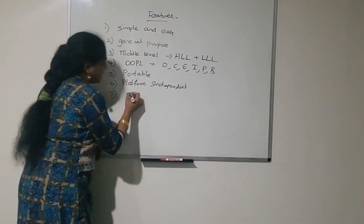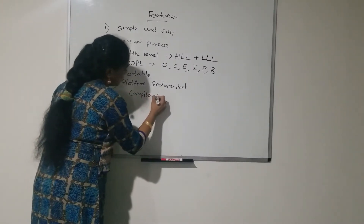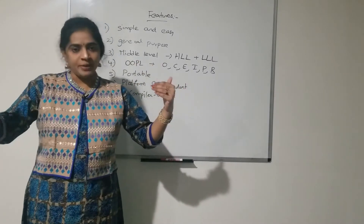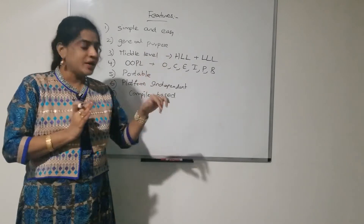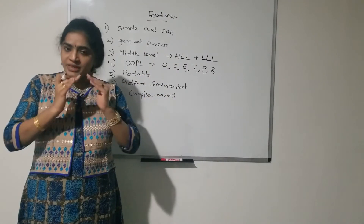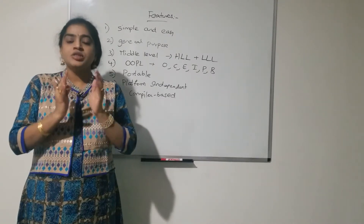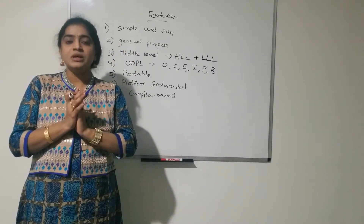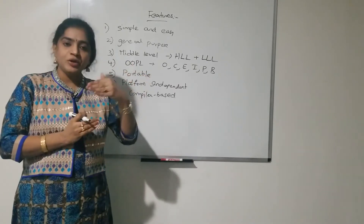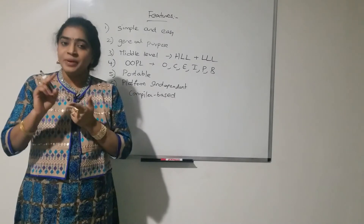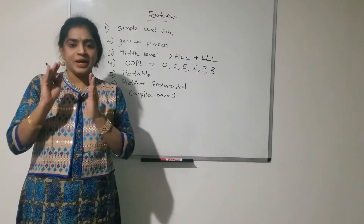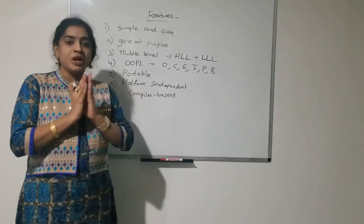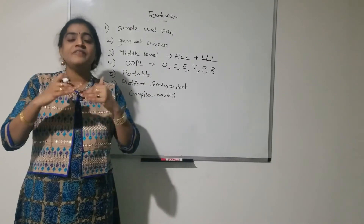C++ is a compiler based programming language. The language translator used here is a compiler. Compiler-based programming languages are fast with respect to performance — the execution speed is greater compared to interpreted programming languages. Python is an interpreted language and its performance is not up to the mark, but C and C++ are compiler-based and very fast.